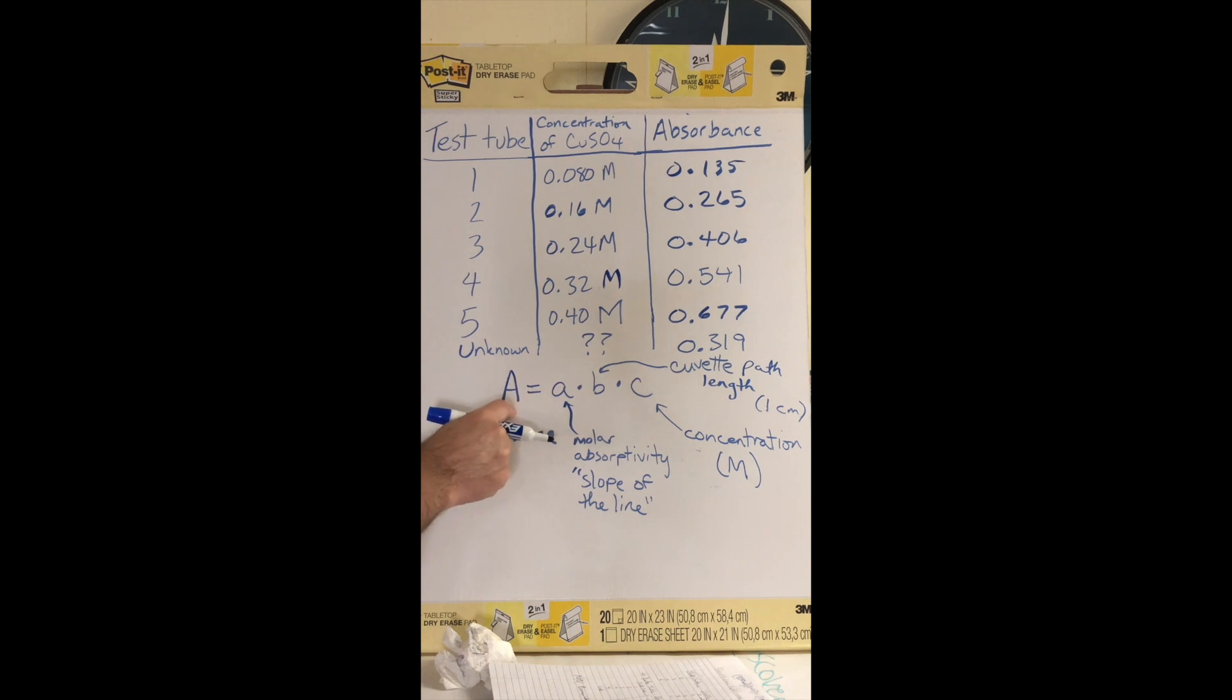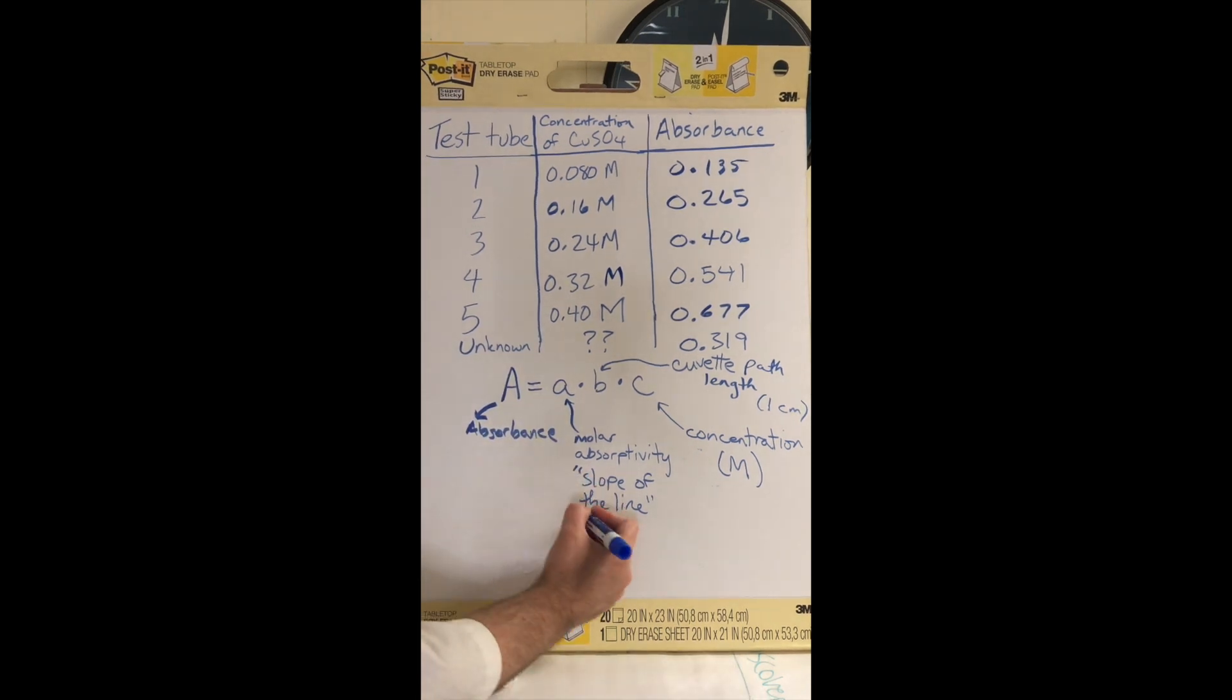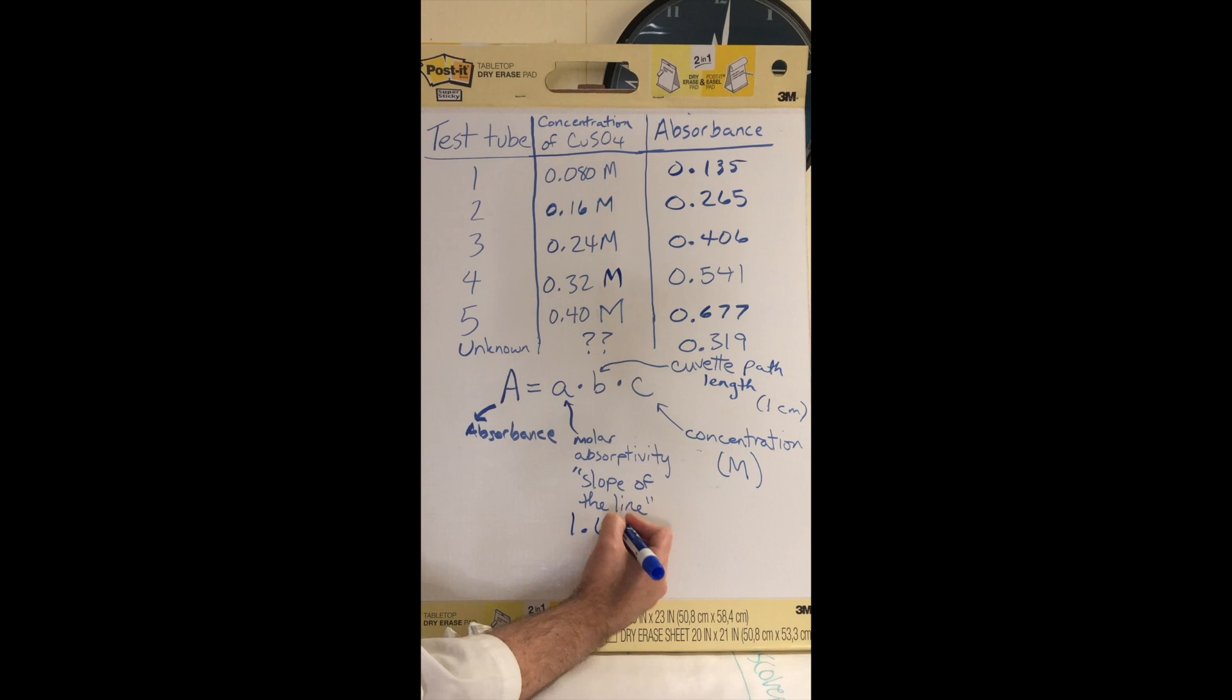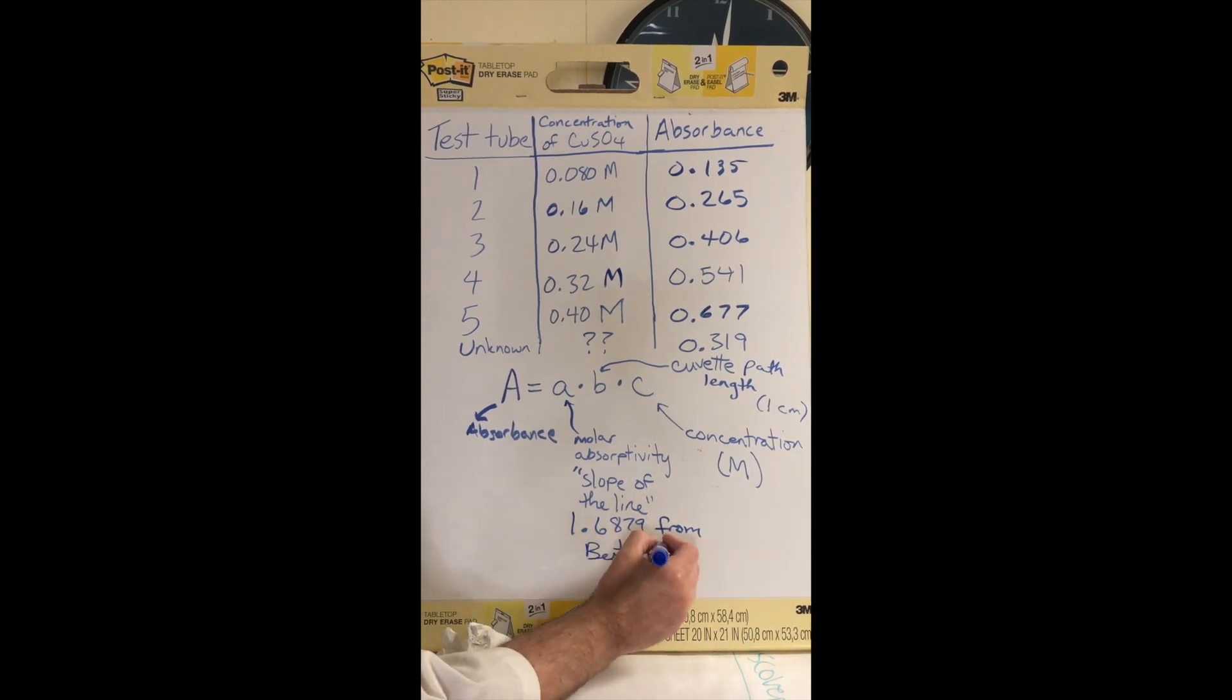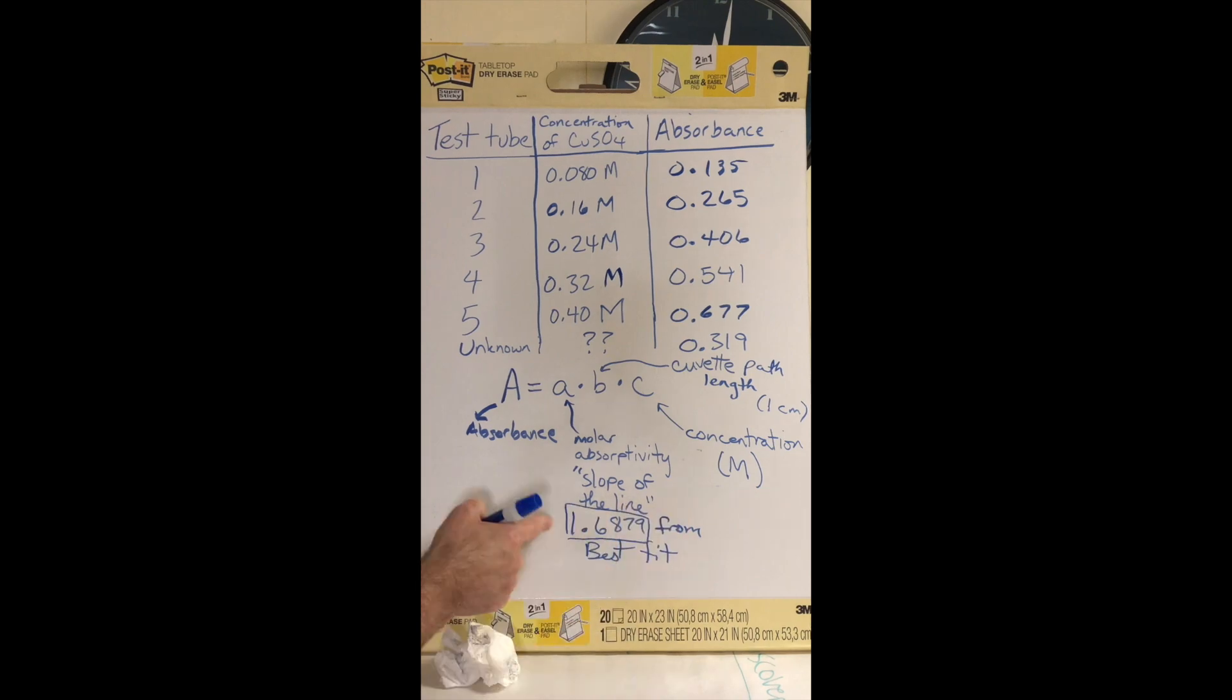I know, that's a little chemistry humor there, but it works, and it works really well. So the molar absorptivity is from the line of best fit. That's the slope of the line.